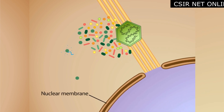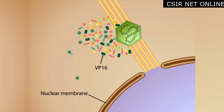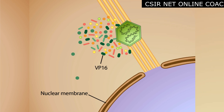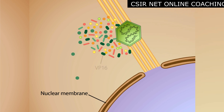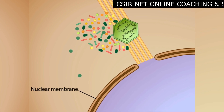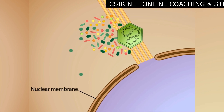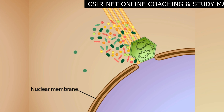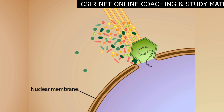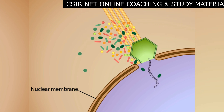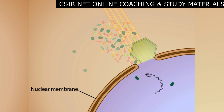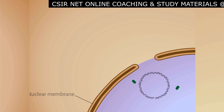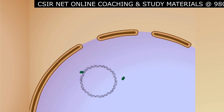Another tegument protein called VP16 ultimately protects the viral mRNAs and also acts as a transcriptional activator of gene expression in the viral genome. At a nuclear pore, the herpes chromosome enters the nucleus, and the DNA then circularizes to form a plasmid-like intermediate.